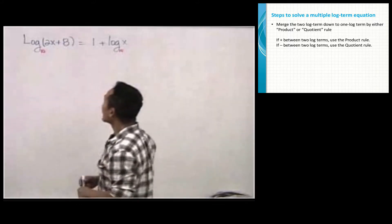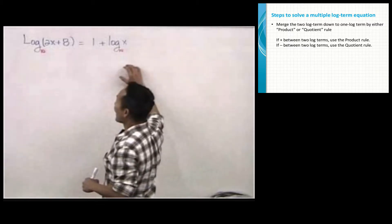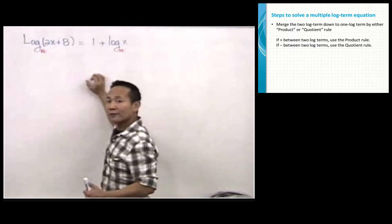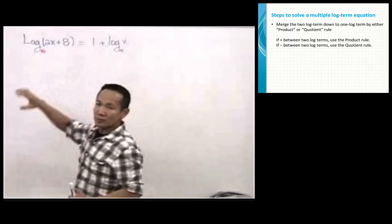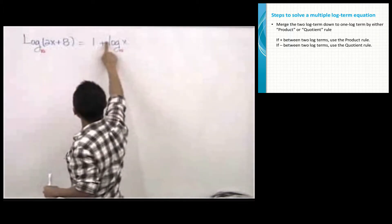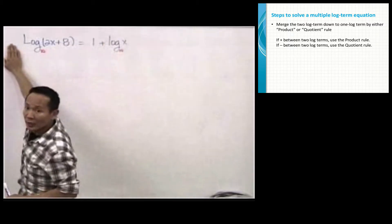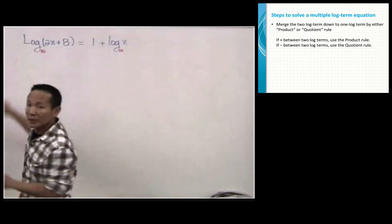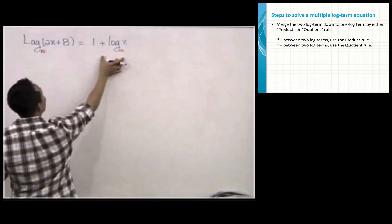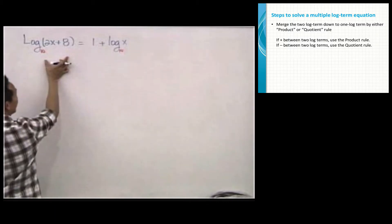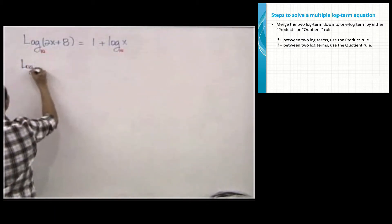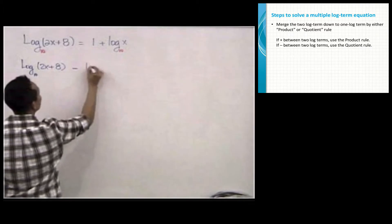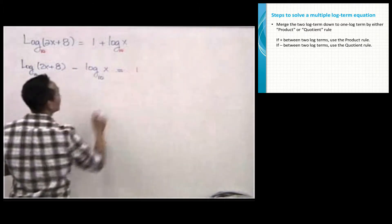In the first example, I want to show you how to merge two log terms down to one. Before doing that, we must gather all log terms to one side. I have one log term on the left with a coefficient of one, and another log term on the right with a coefficient of one. The coefficient must be one before you can merge. So I am going to subtract log x from both sides: log base 10 of (2x + 8) minus log base 10 of x equals 1.